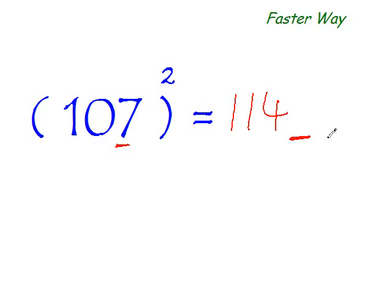Now, two more digits to go. 7 square is 49. So your answer is 11,449. That's it.